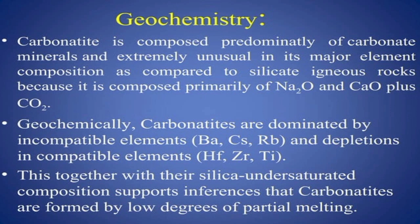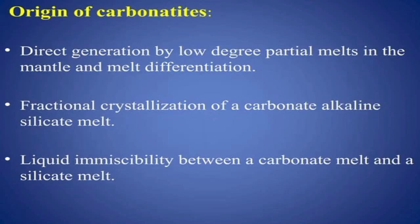On a geochemistry basis, carbonatite is composed predominantly of carbonate minerals and is extremely unusual in its major element composition compared to silicate igneous rocks, because it is composed primarily of Na₂O, CaO, and CO₂. It is also dominated by incompatible elements and shows depletion in compatible elements such as hafnium, zirconium, and titanium. This, together with their silica-undersaturated composition, supports the inference that carbonatites are formed by a low degree of partial melting.